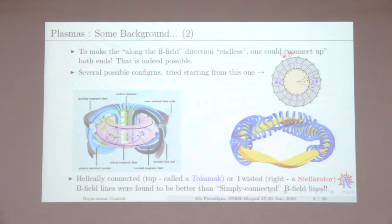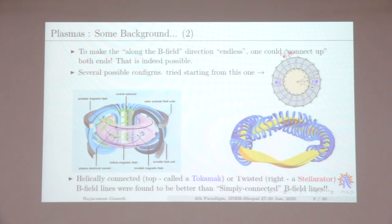Several configurations have been explored around the world. On the left is a tokamak, first discovered in the USSR in the 1950s, which has plasma and a current in it so that the net magnetic field is helical. On the right is a stellarator, which is even more complex — the helical magnetic field is produced entirely by external coils and looks like a dinosaur's bone.